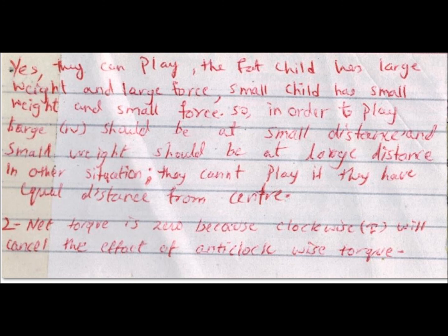In this situation, both bodies are at rest, which means the net torque is zero. The clockwise torque cancels the effect of the anticlockwise torque. So the body is in equilibrium and balanced when the net torque of clockwise and anticlockwise movements cancel each other.